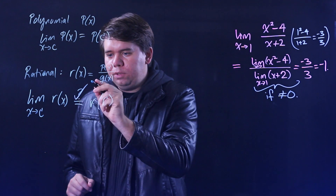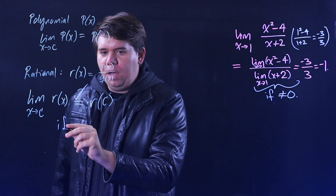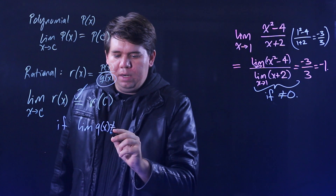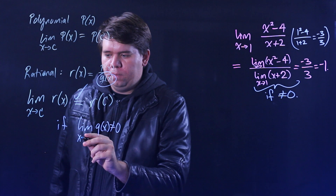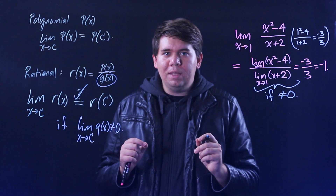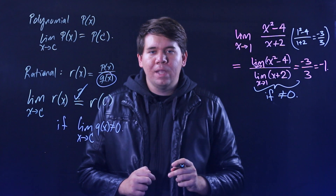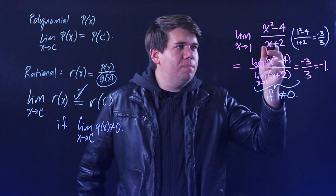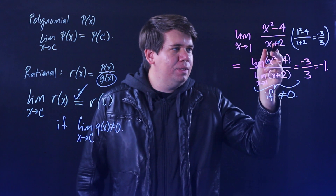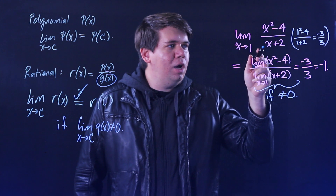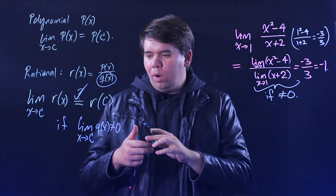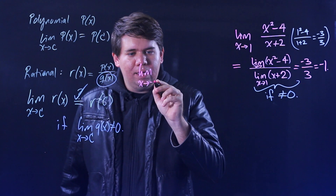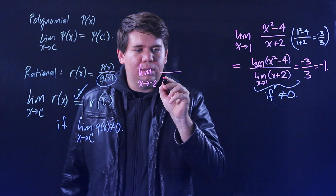This holds if the limit of the bottom piece, q of x, is not equal to 0. So what happens when the bottom does come out to equal 0? The bottom would go to 0 not as x approaches 1, but as x approaches minus 2. Let's investigate the limit as x goes to minus 2, since that would make the bottom 0.